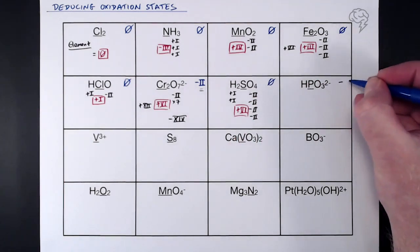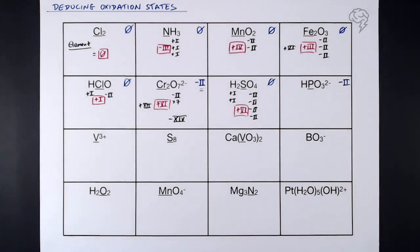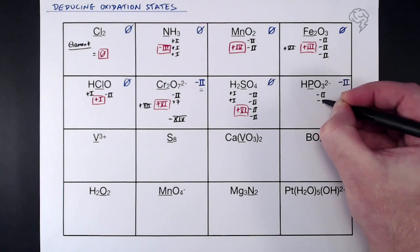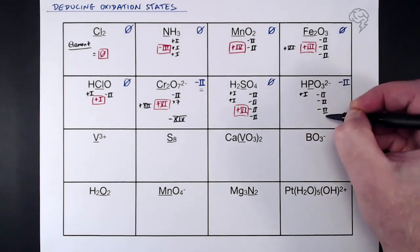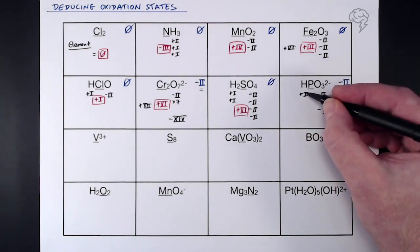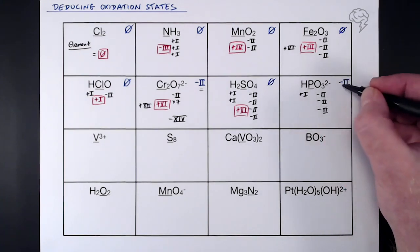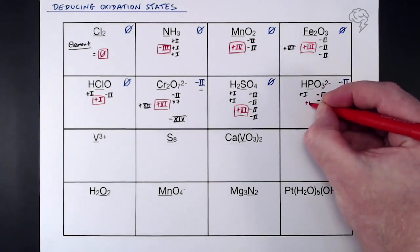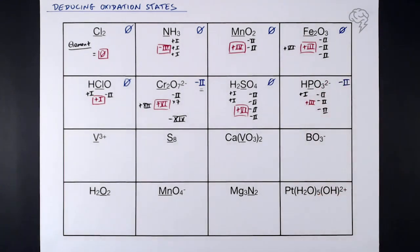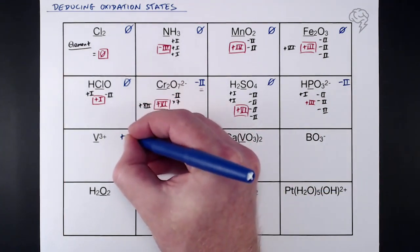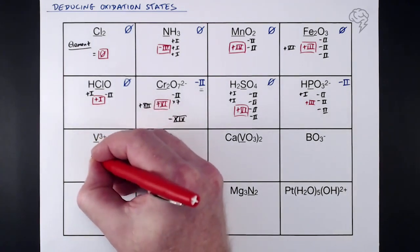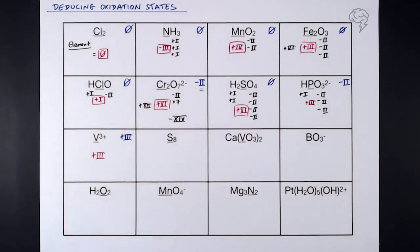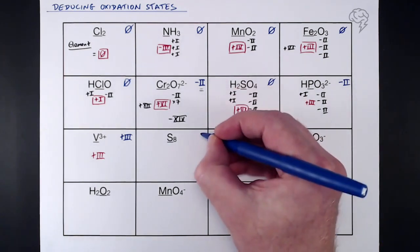HPO₃²⁻: the overall oxidation state is -2 because of the 2- charge. We've got three lots of oxygen giving -6, and hydrogen gives +1, so -6 + 1 = -5. We need to get from -5 to -2, so the phosphorus must be +3. Then vanadium V³⁺: it's an ion with a 3+ charge, and since it's a single element, the oxidation state equals the ion charge, which is +3.